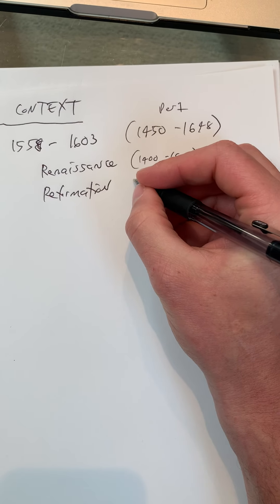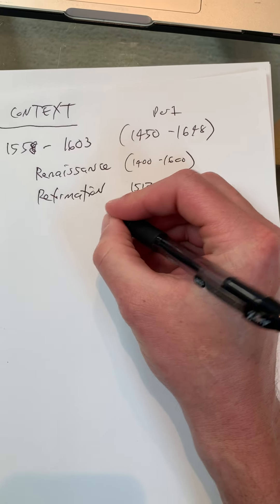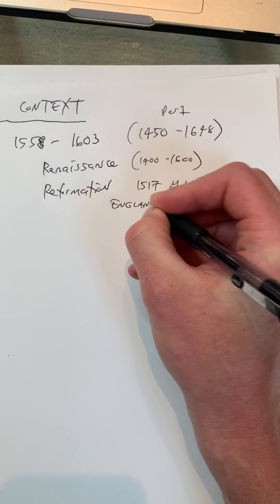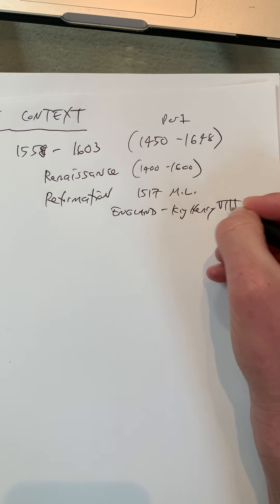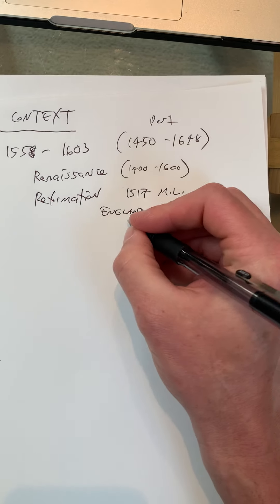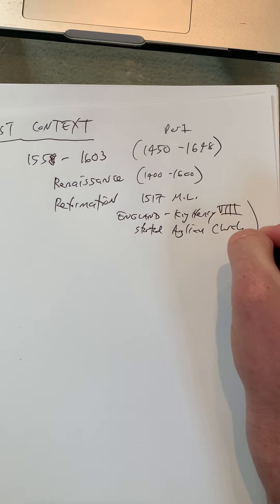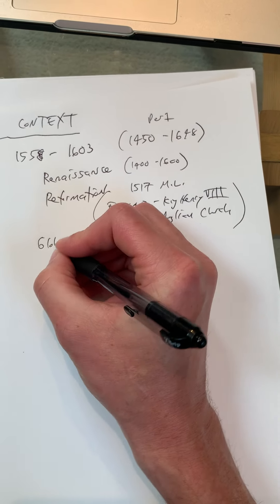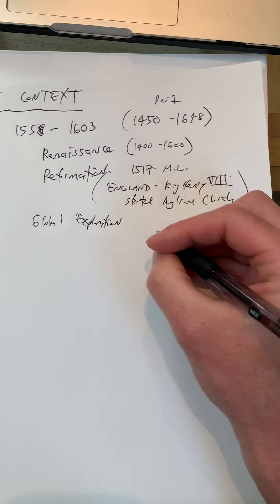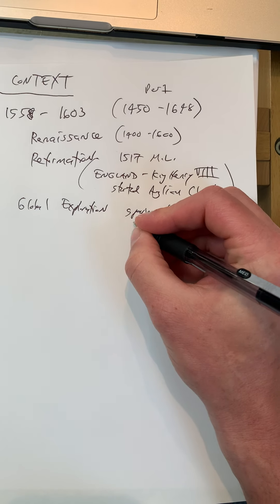The other major chapter during this time is the Reformation — the breaking point in 1517 with Martin Luther. In England, King Henry VIII started the Reformation by breaking with the Catholic Church and starting the Anglican Church.